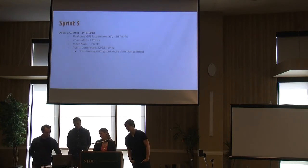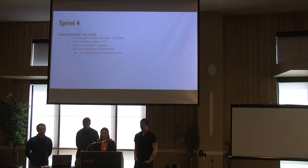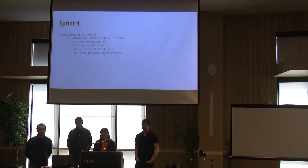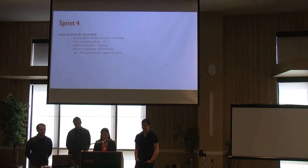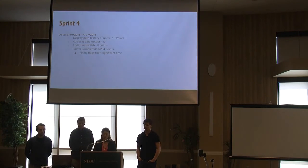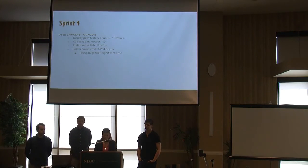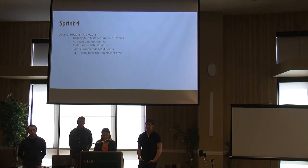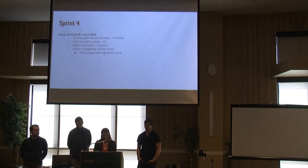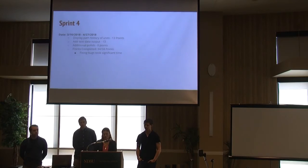That brings us to sprint four, our final sprint. After sprint three we were pretty much done with the project. What remained was additional polish and code cleanup — better commenting, removing unused test code, and organizing resources into a separate package. During sprint four, we also encountered and fixed a handful of bugs, which took significant time. We also chose to work on a stretch goal: display path history. Each unit now displays where it had been, and we got that done as a stretch goal in sprint four.